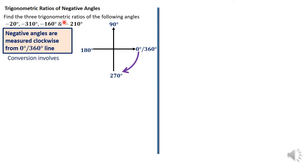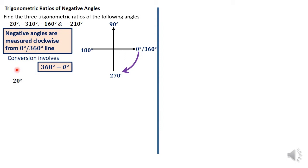The operations for this sort of trigonometric ratio normally involve a conversion. The conversion involves: take 360 degrees minus the given angle. So if you're given minus 20 degrees, minus 310, minus 160, or minus 210 — whatever angle you're given — you just compute 360 minus theta. In this case that would be 360 minus 20.